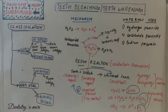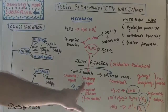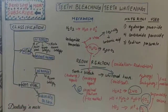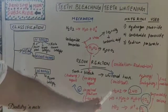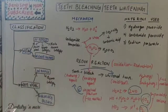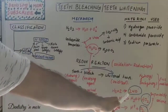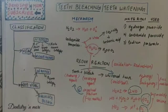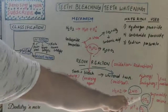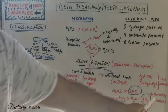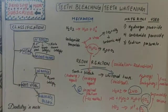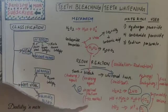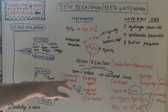What the bleaching agent exactly oxidizes is the chromogenic pigments — these pigments are what give the tooth a darker shade. They have unpaired electrons, that is, free radicals. Hydrogen peroxide, after reaction with saliva, becomes free radicals: hydroxyl and para-hydroxyl free radicals, as well as superoxide anions — all having unpaired electrons.